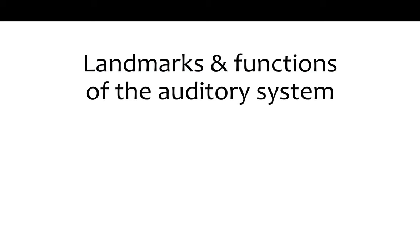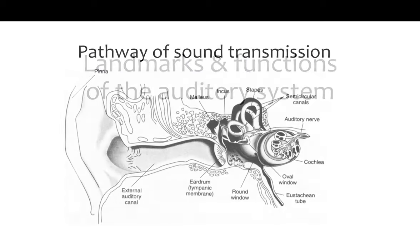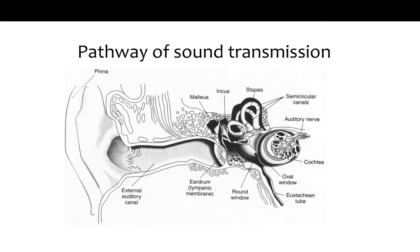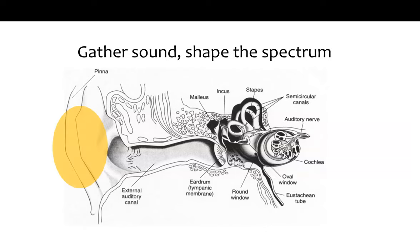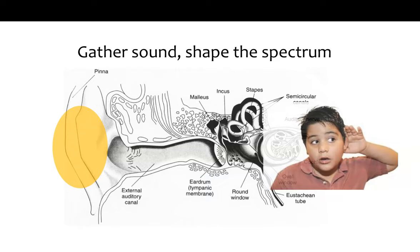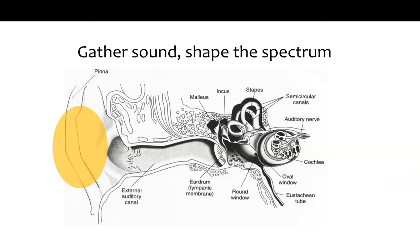Let's start with some of the basic landmarks and functions of the auditory system. We can think of this as a pathway of sound transmission from the outside — from the air around us — into the brain. In the first part, the outer ear, we're really just thinking about the visible part of the ear, the pinna, that sort of goofy shape on the side of your head. The function of this isn't really to transmit any messages; it's really the same function as if you cupped your hand to the side of your ear to gather more sound. Secondarily, it will also shape the spectrum.